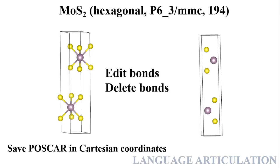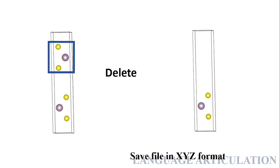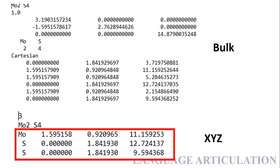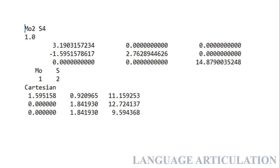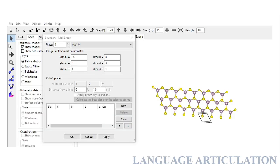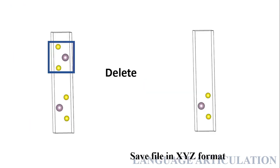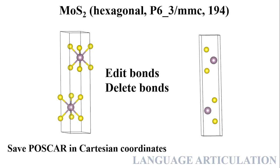The steps are simple: first, edit bonds to see the actual structure, save as POSCAR, delete replicas, copy the XYZ you have saved into the bulk file, and then open that file in VESTA. This is a simple case with only one replica and the structure is not very complicated. It belongs to the hexagonal system with P6₃/mmc space group.